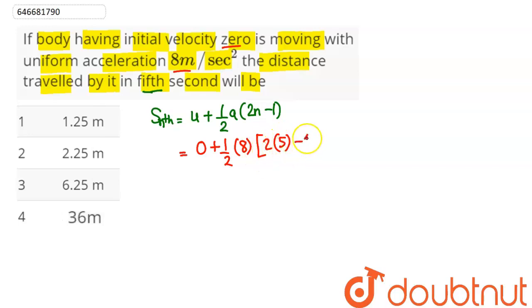Hence, this comes out to be 4 into 10 minus 1, which is 9. So 4 into 9 is 36 meters.